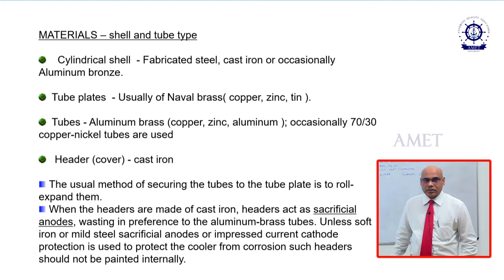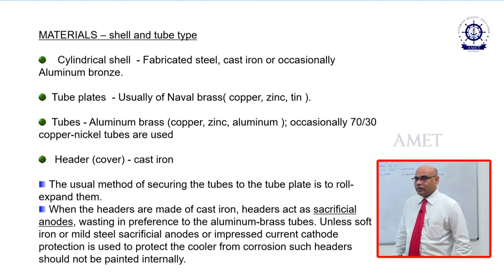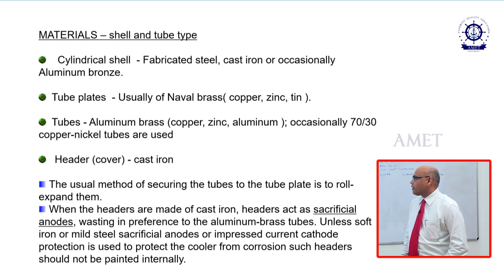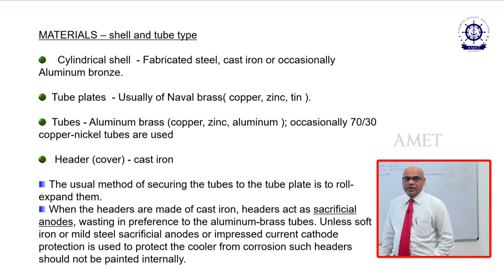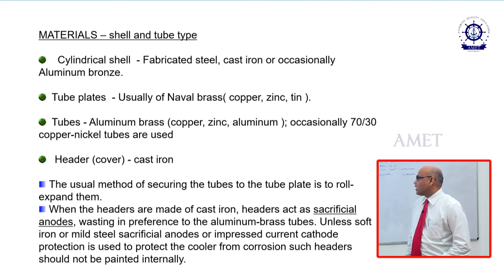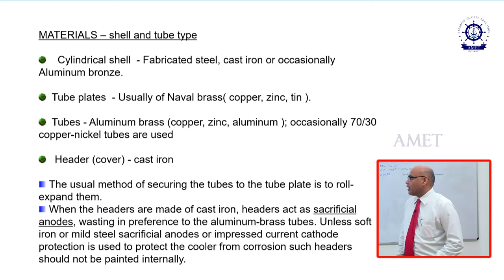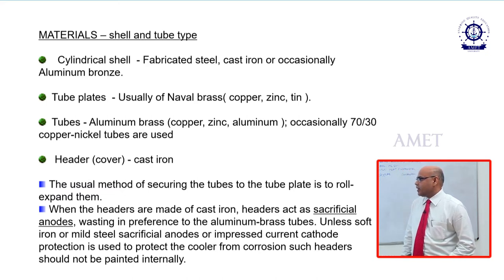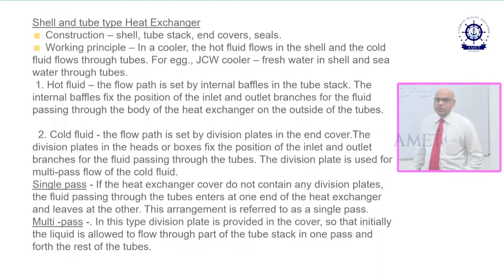Regarding materials: the shell is fabricated of stainless steel, cast fabricated steel, or cast iron. The tube plates are usually naval brass — these are alloys of copper, zinc, and tin. The tubes are aluminum brass, and the head cover is made up of cast iron.